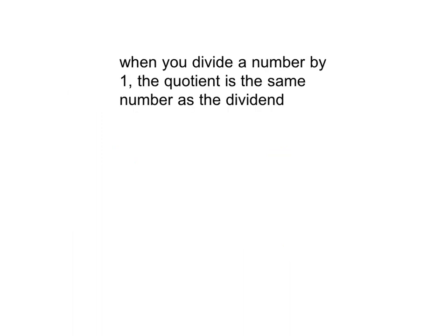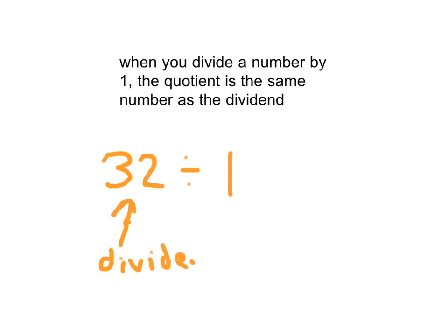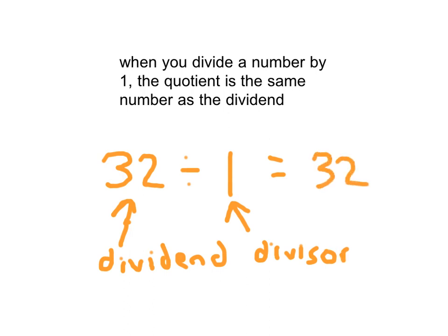Here's another rule. When you divide a number — let's say 32 — and you divide that number by 1, the quotient, which is the answer to our division problem, is still going to be the same number as that dividend. 32 divided by 1 is 32.